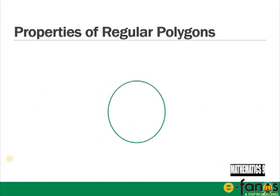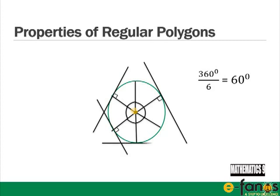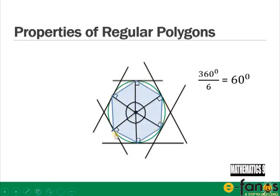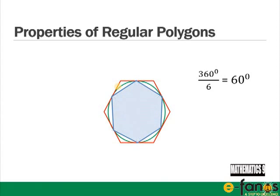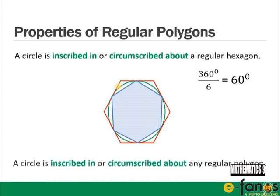Starting with a circle, to construct a hexagon we divide 360° by 6 to get 60° sections. Drawing tangents around the edge forms a hexagon outside the circle, and joining the intersection points on the circle gives a hexagon inside. A circle can be inscribed in or circumscribed about any regular polygon.